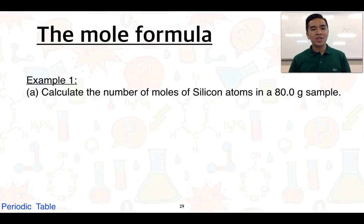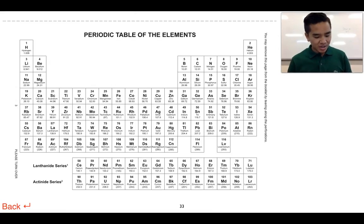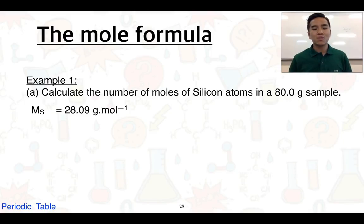Let's see how we can use the mole formula. In this first example, we want to calculate the number of moles of silicon atoms in an 80.0 gram sample. From the periodic table, the molar mass of silicon is 28.09 g·mol⁻¹. We're going to use our mole formula: n = m/M. We have both the mass and molar mass, so we substitute those values in: 80.0 divided by 28.09.